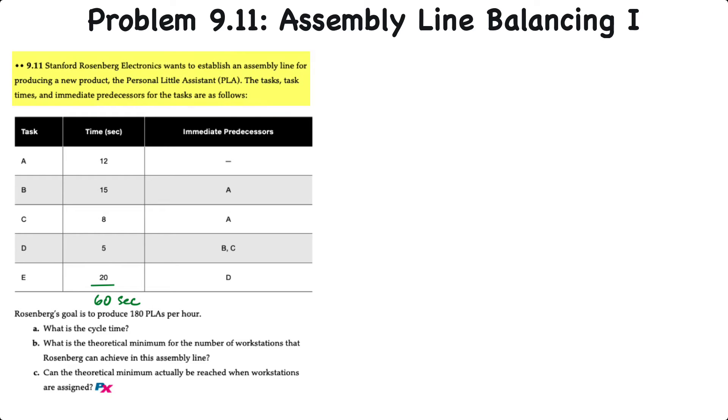In this question, Stanford Rosenberg Electronics wants to establish an assembly line for producing a new product known as the PLA. The tasks, task times, and immediate predecessors are in the table. We have tasks A through E, with times ranging from 5 to 20 seconds, and the immediate predecessors indicated. We can determine that the sum of the task times adds up to 60 seconds. Rosenberg's goal is to produce 180 PLAs per hour.